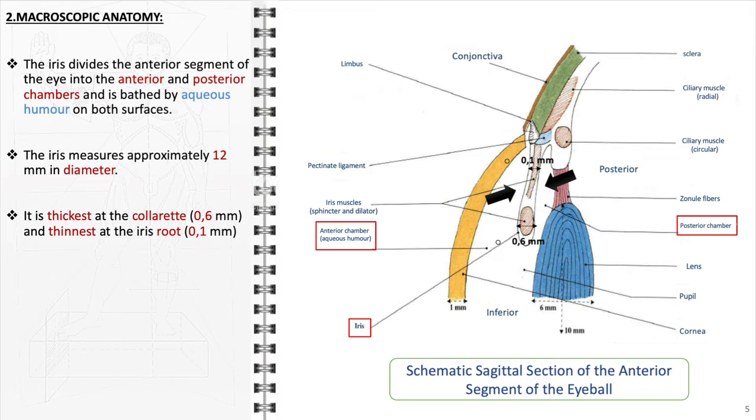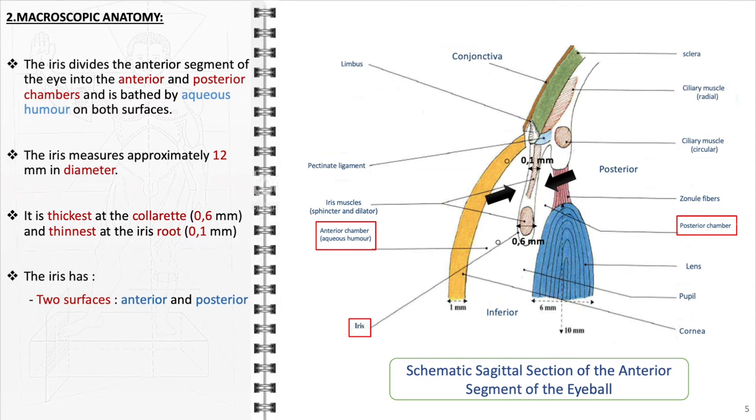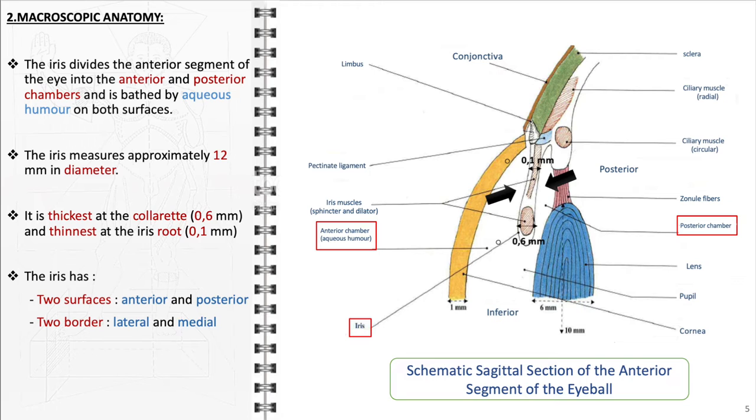The iris is comprised of two surfaces, an anterior surface and a posterior surface, and two borders, a lateral border and a medial border.